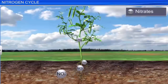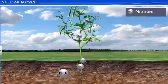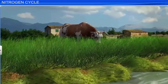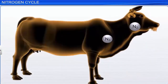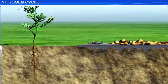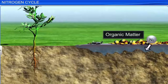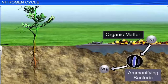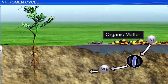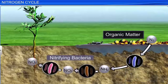Plants absorb nitrogen in the form of nitrates through their roots, which then transport it to the leaves. Nitrogen in plants reaches animals through the food they eat. When plants and animals die, the organic material in them returns to the soil. The nitrogen in dead plants and animals is decomposed by ammonifying bacteria to form ammonia. This process is called ammonification. Ammonia formed by ammonification is converted into nitrites and nitrates by nitrifying bacteria in the soil. This is called nitrification.